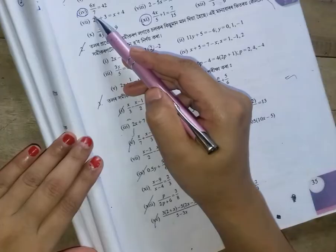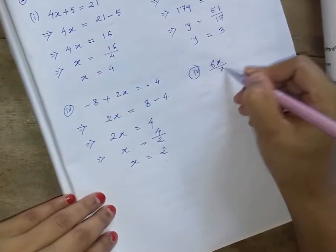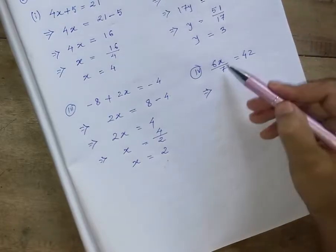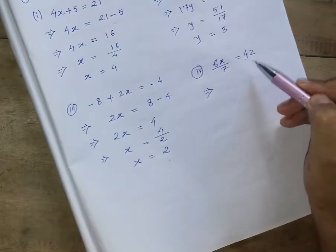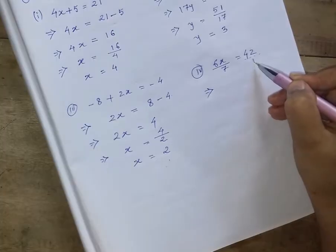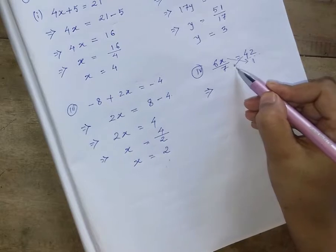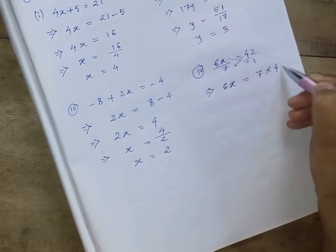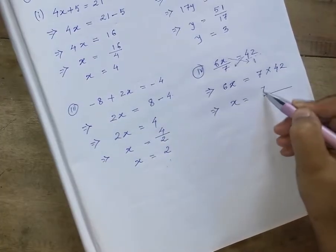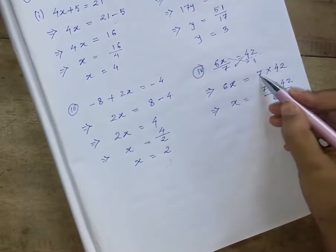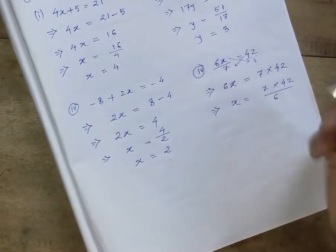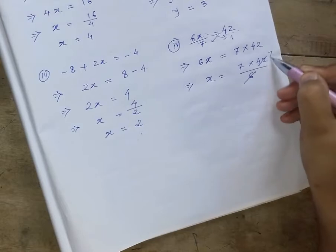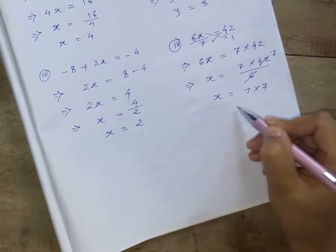6x divided by 7 equal to 42. Multiply both sides by 7: 6x equals 7 into 42. So x equals 7 into 42 divided by 6, giving x equals 49.